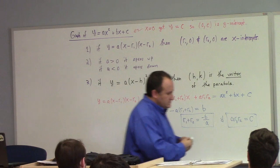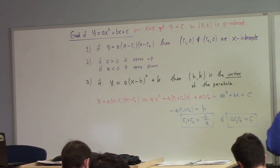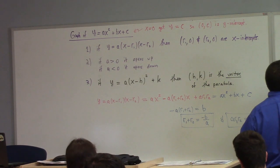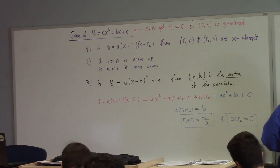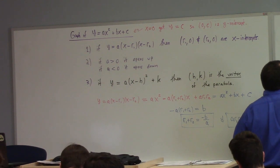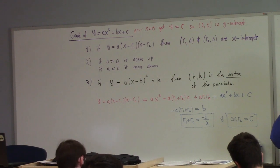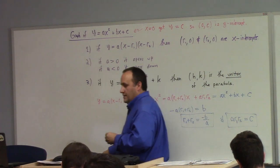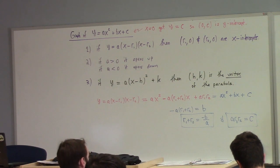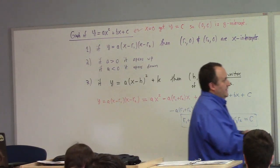But how about this h and this k? That's kind of wacky, right? Let's multiply that out. So we get y is equal to a times x minus h squared plus k. If I multiply this out, collecting things, we've got ax squared, minus 2ahx plus ah squared plus k. This is still equal to the original ax squared plus bx plus c.